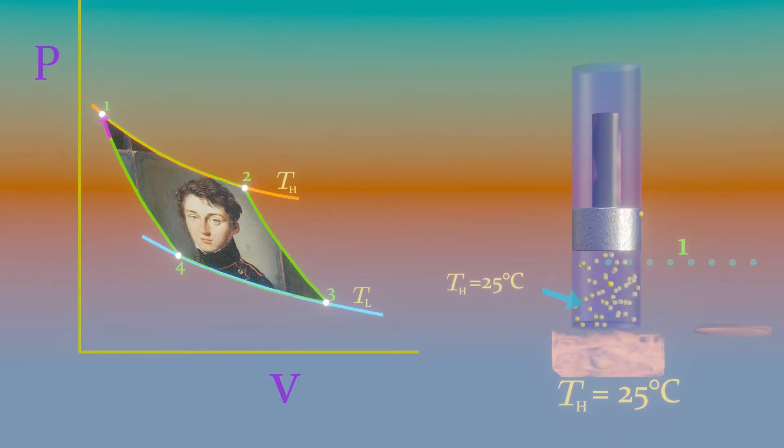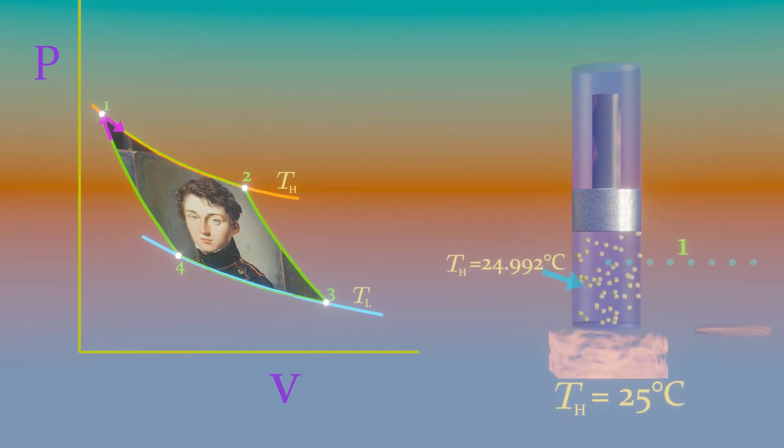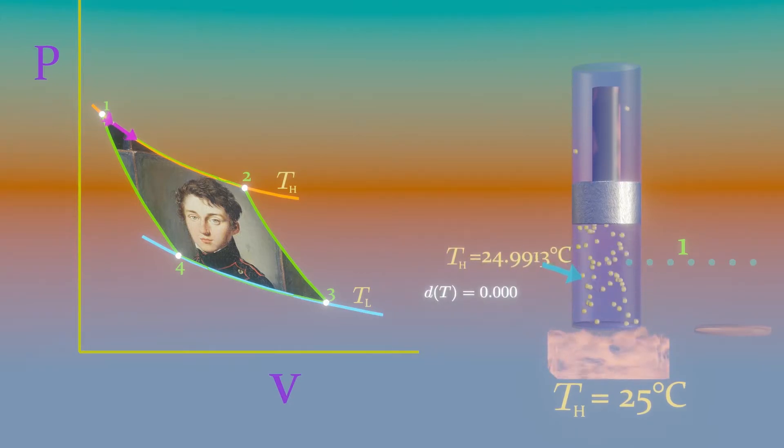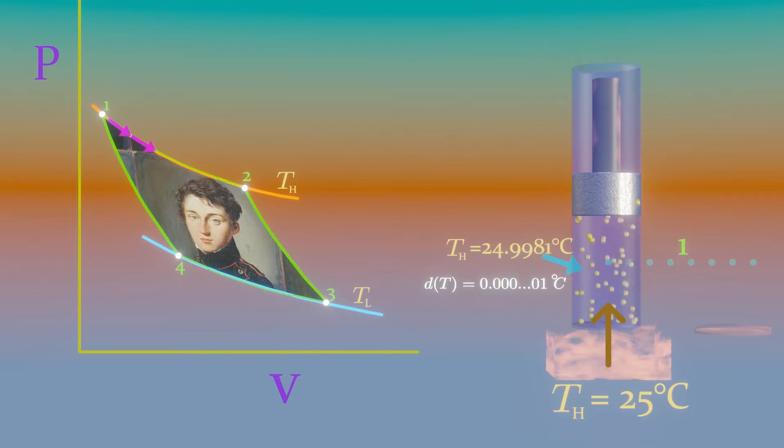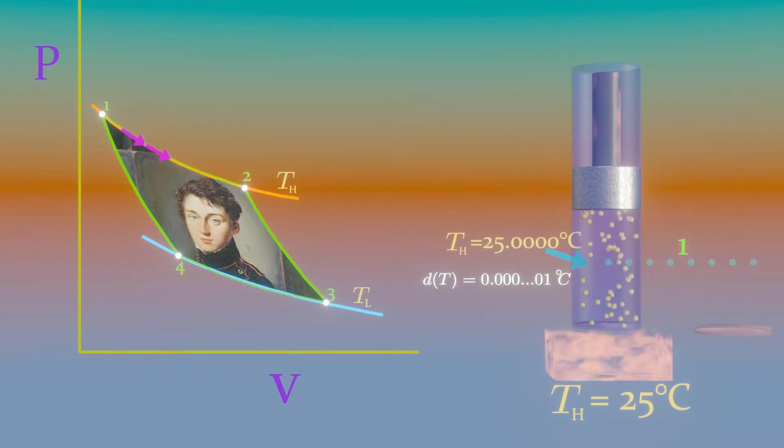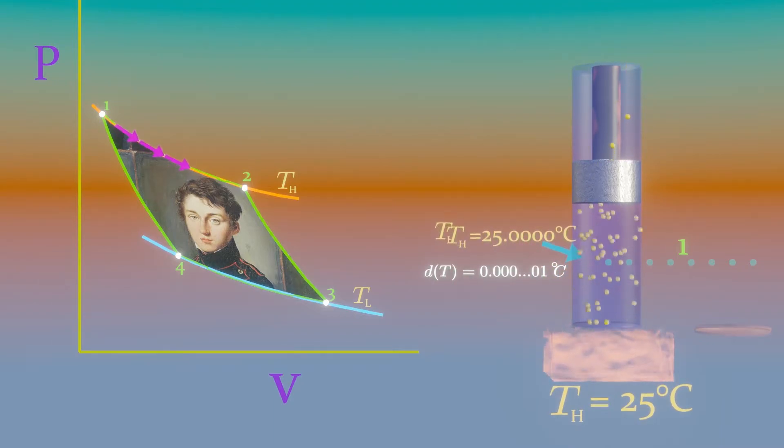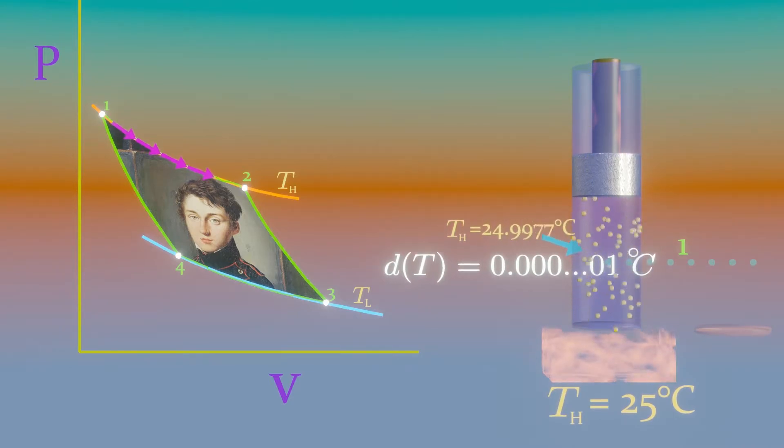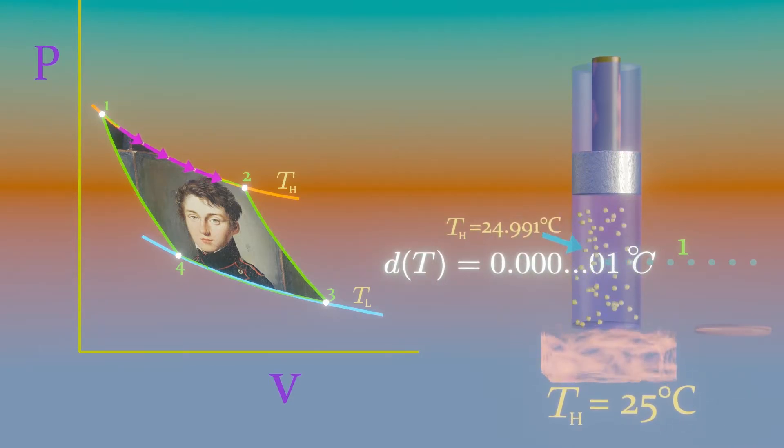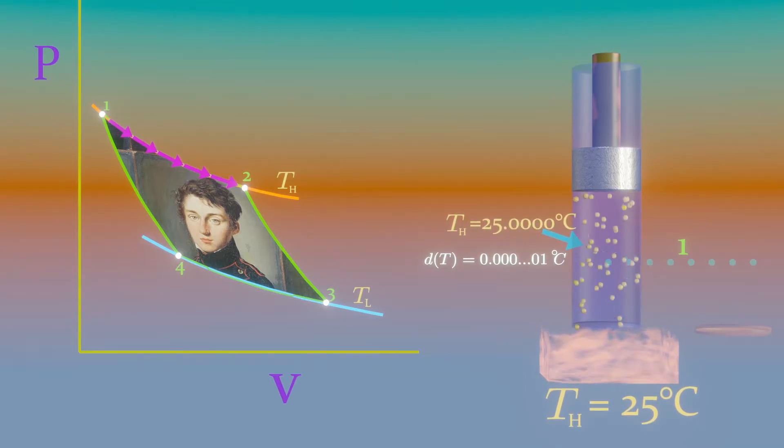As the gas expands, the temperature of the gas tends to decrease. But as soon as the temperature drops by an infinitesimal amount dT, some heat is transferred from the reservoir into the gas, raising the gas temperature to TH. Thus, the gas temperature is kept constant at TH. Since the temperature difference between the gas and the reservoir never exceeds a differential amount dT, this is a reversible heat transfer process.